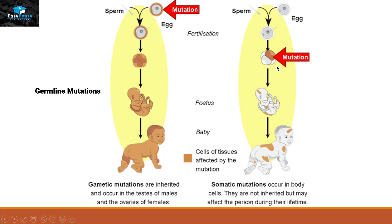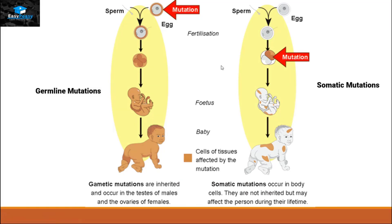On the other hand, in this picture you can see that the mutation is occurring after fertilization. This mutation will appear inside that individual but it will not pass on to the next generation. That type of mutation is called a somatic mutation.